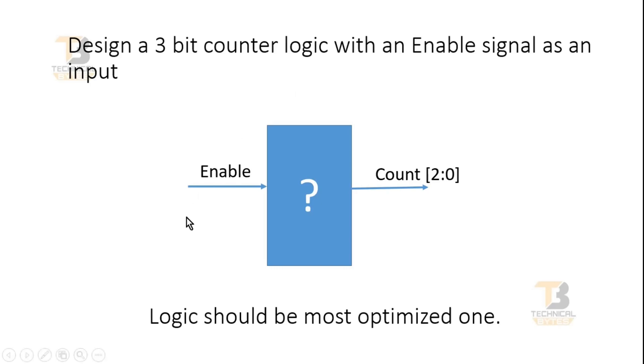If I can give you a solution with the most optimized one, then I will not consider your answer as the right one. Now here you have to design this unknown block and it has an input that is enable signal. It should give me an output as count 2 down to 0.